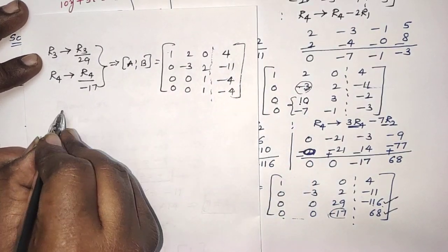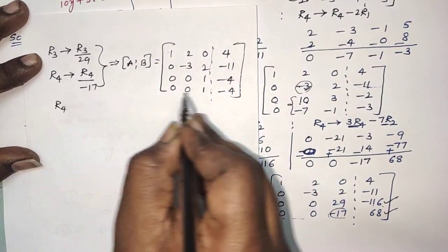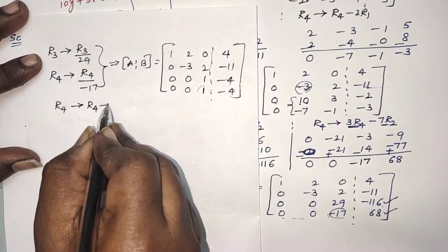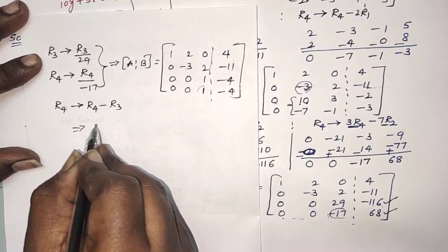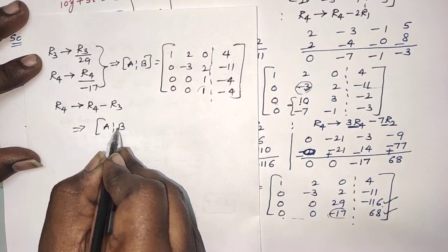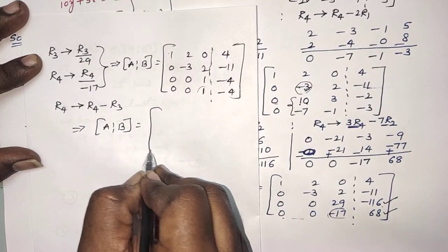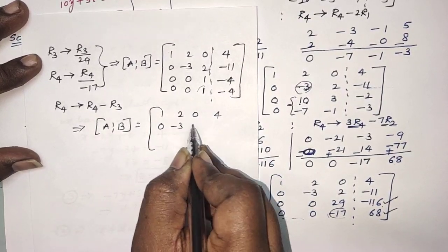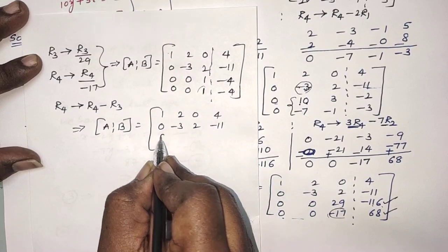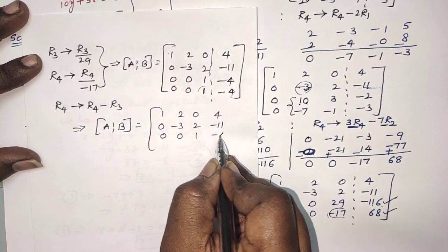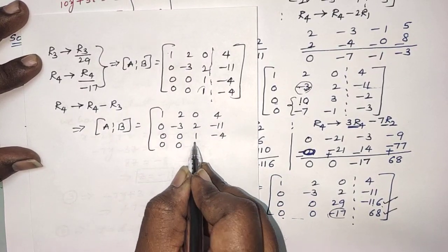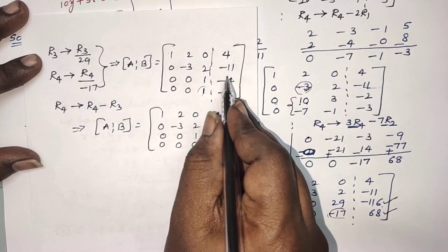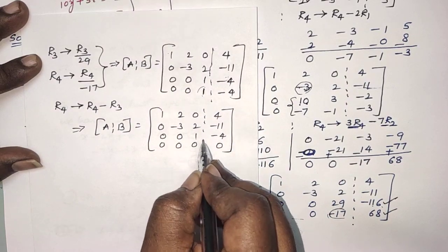Now we can easily make this element zero: R4 → R4 minus R3. The augmented matrix [A|B] becomes: 1, 2, 0, 4 / 0, minus 3, 2, minus 11 / 0, 0, 1, minus 4 / 0, 0, 0, 0. Because 1 minus 1 = 0, and minus 4 minus (minus 4) = 0. Now A and [A|B] are in echelon form.